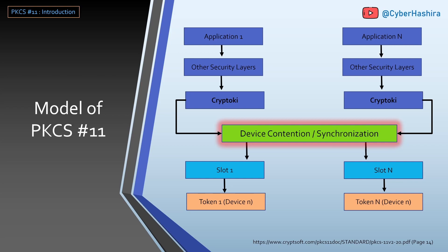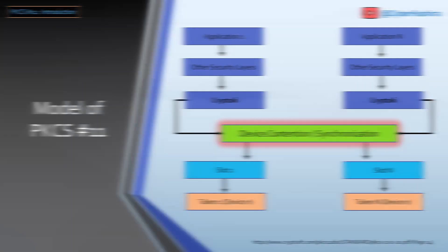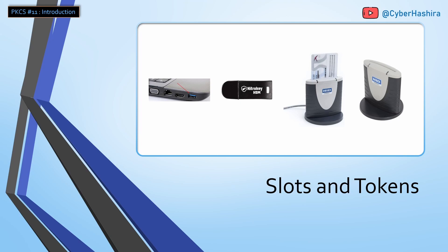The device that performs all crypto operations and stores all your keys is known as a token. A token can be a smart card, a USB token, or a token from a hardware security module. These tokens are available in a slot. A slot is simply a physical interface where a token is connected. For example, a smart card reader is a slot, and a smart card connected to it is a token. Similarly, a USB port can become a slot, and when a USB device is connected to it, that device becomes a token. A smart card reader without a smart card is just an empty slot in PKCS#11.